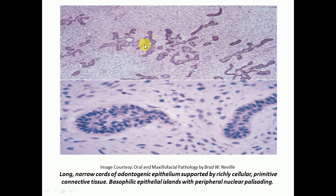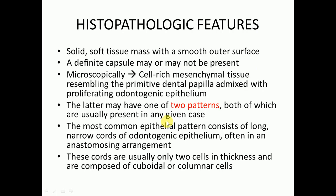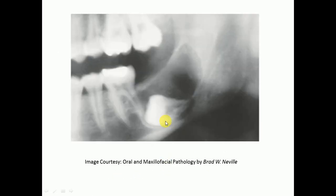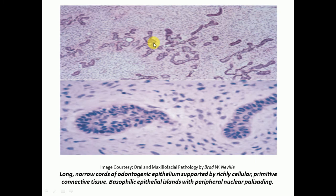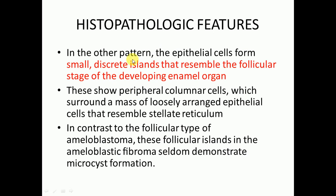Here we can see long narrow cords of odontogenic epithelium within a cell-rich connective tissue. These cords anastomose with each other. The narrow cords of odontogenic epithelium are usually only two cells in thickness and are composed of cuboidal or columnar cells.